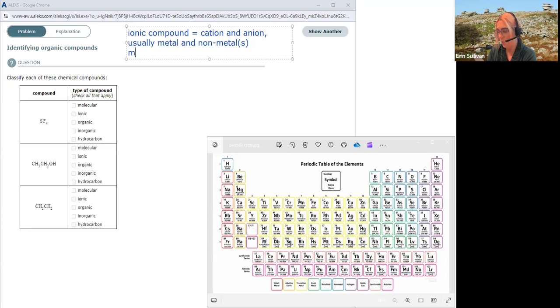A molecular compound is formed by sharing of electrons, and this is between nonmetals and other nonmetals. So if you see just all nonmetals together, it could be two, could be if it's binary, it could be many. That would be defined as a molecular compound.